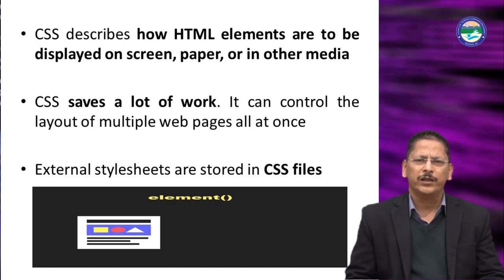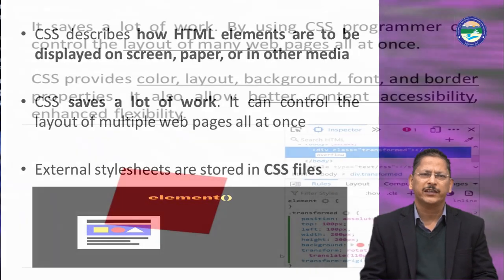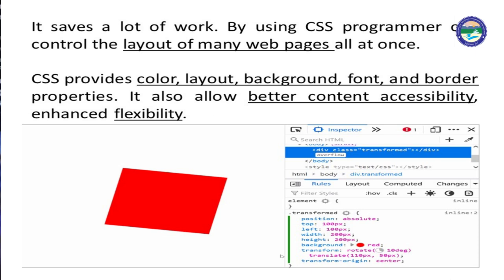Another feature of CSS is that it saves a lot of work — the programmer can control the layout of web pages at once. We store the formatting and layout in a separate file, and this is applied to every page. Suppose we have 1,000 pages — instead of writing different formatting 1,000 times, we store the formatting in one place and apply it to each page. CSS provides color, layout, background, font, and border properties, and also allows better content accessibility and enhanced flexibility.